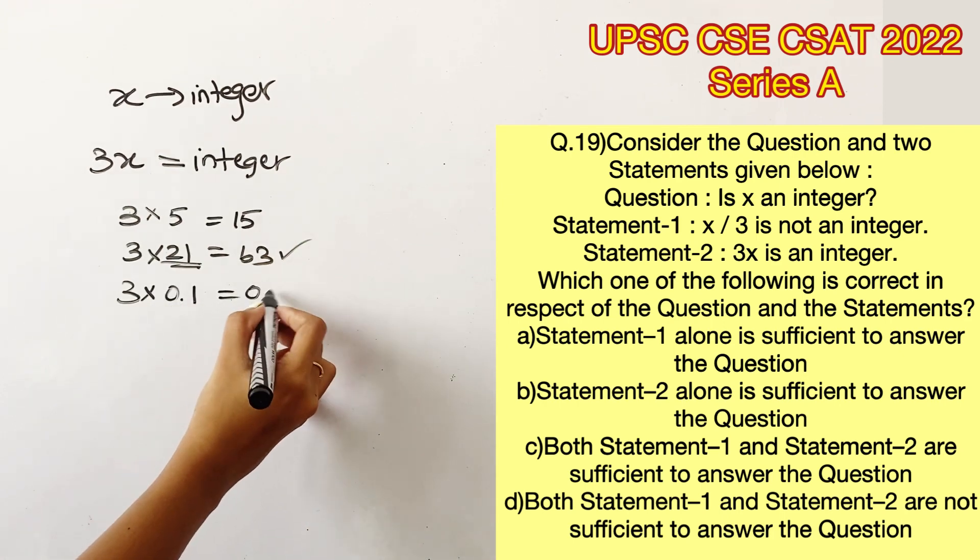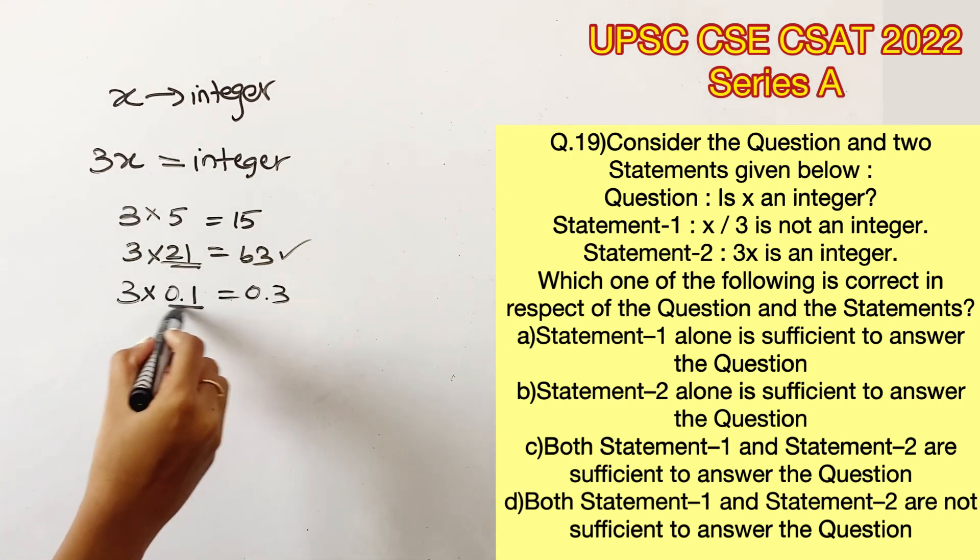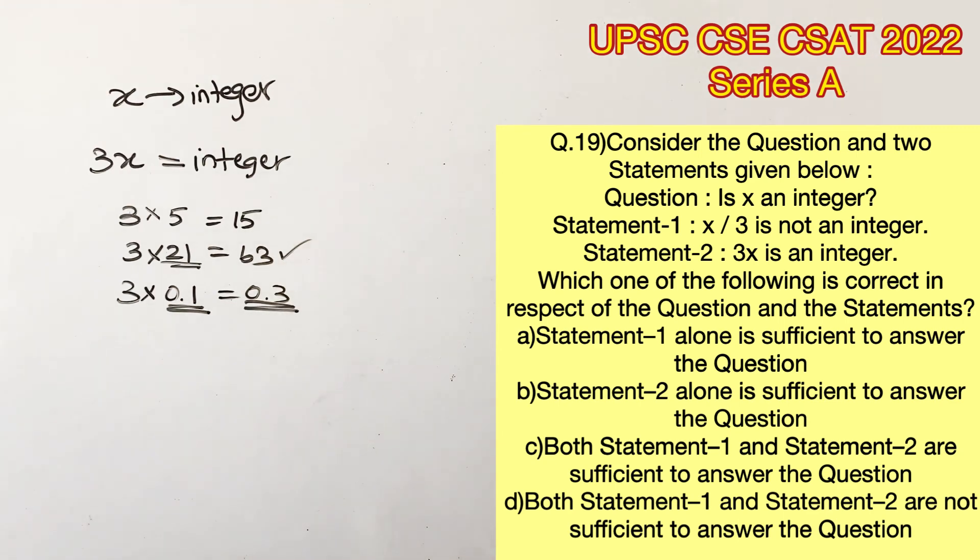Let's take 0.1, which is going to give us 0.3. So taking a decimal value is providing an answer which is also a decimal number. But there is one case where even if we take a decimal value in the place of x, we are going to get an integer value as the answer.